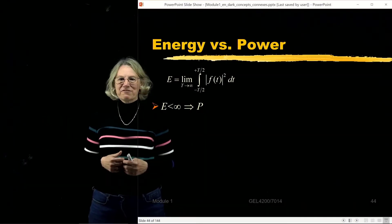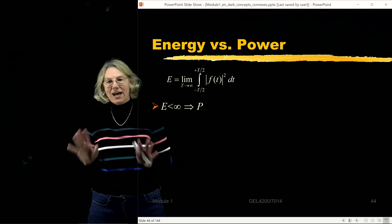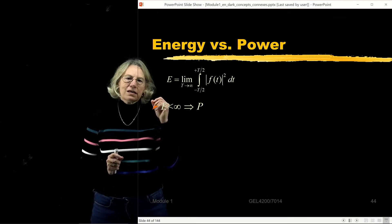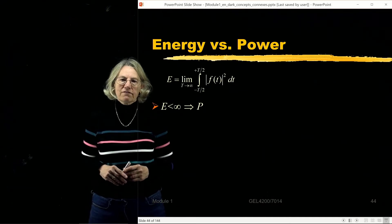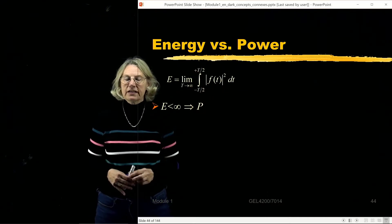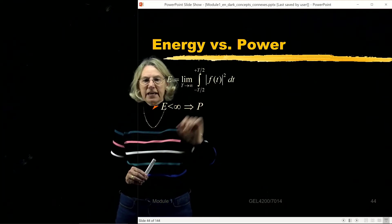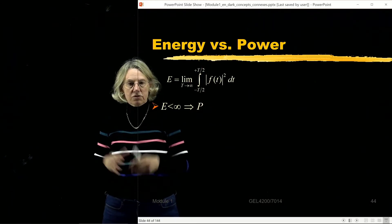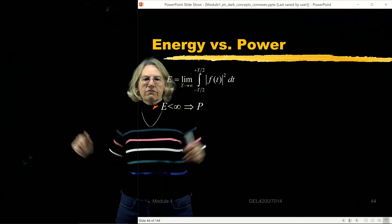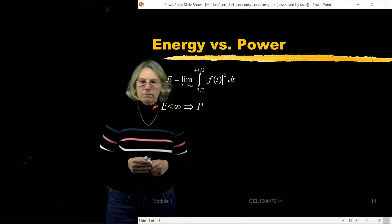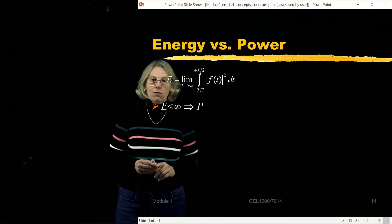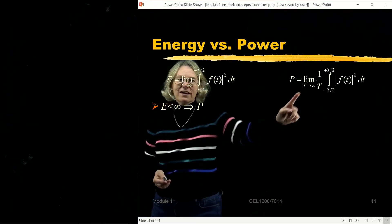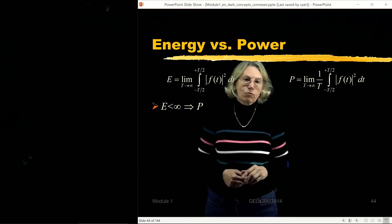Now, energy versus power. The definition of energy of a signal can be put in asymptotic form: it's the limit as T goes to infinity of the integral from -T/2 to T/2 of the signal squared — an interval around the origin that grows larger. An energy signal is one where this calculated energy is finite. Power is defined as the same limit but with a normalization of 1/T, giving the average power.